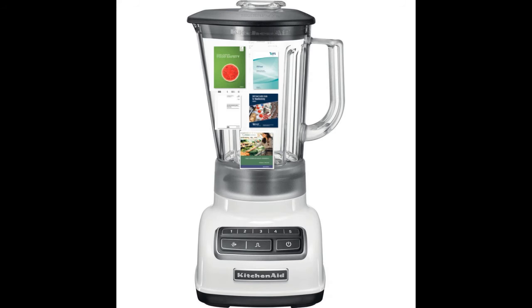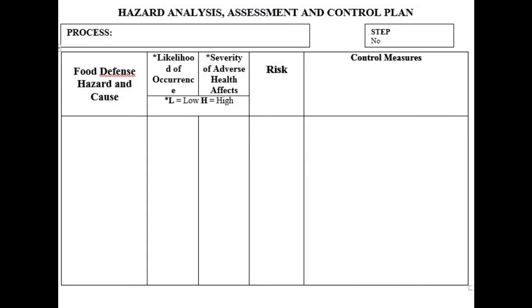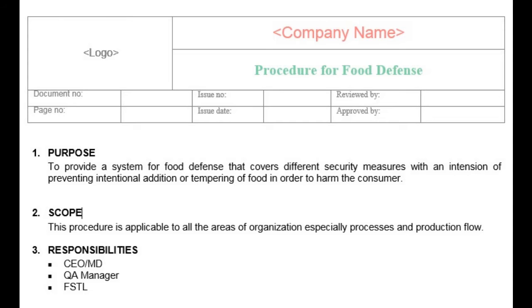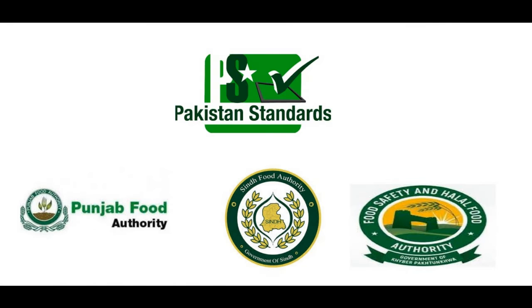If we take all the requirements from all the standards and blend them together, we get the following common requirements: do the food defense analysis, do the food defense risk assessment, establish the food defense mitigation plan, make the food defense procedure, and consider all applicable legal requirements. In the mitigation plan and procedure, we can take various measures based on risk to mitigate any food defense hazards in the product and process.